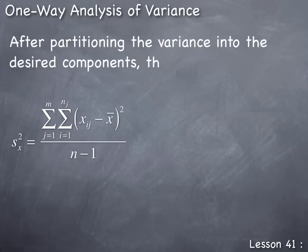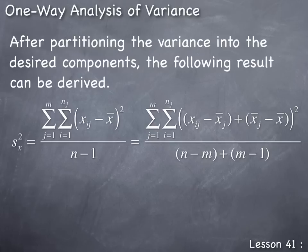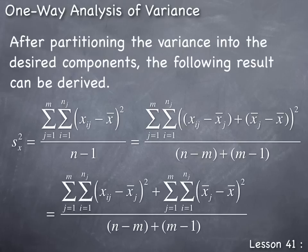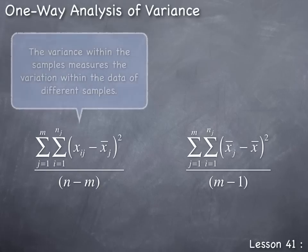After partitioning the variance into the desired components, the following result can be derived. In the numerator, a subtract x̄ⱼ and an add x̄ⱼ are introduced — essentially zero. In the denominator, a subtract m and add m are introduced — again zero. So introducing these components doesn't change the variance at all; it just rewrites it to show the total variance segmented into various components. Using mathematics and statistical results, we can rewrite this to show how the total variance separates into two components: one measuring variation within the samples and one measuring variation between the samples.